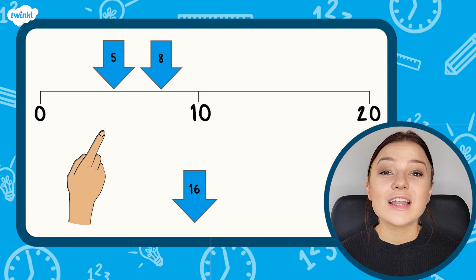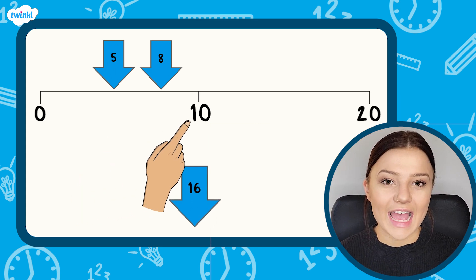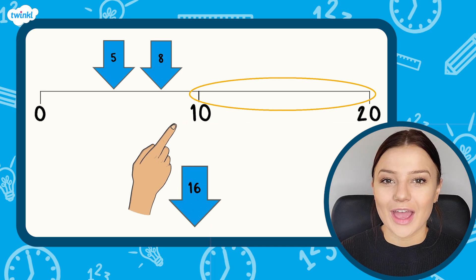The last arrow has the number 16 on it. 16 is greater than 10, so it will be on this half of the number line.